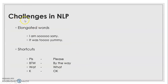Other than these, there are many other challenges in natural language processing. Nowadays when you write on WhatsApp or Twitter, we use elongated words. For example, writing 'I am sooooo sorry' or 'it was tooooo yummy' or 'it was very awesomeeee' to emphasize sentiment. When doing sentiment analysis, these words are very important. Everyone's style of elongating a word is different, so understanding those elongated words is a challenge.